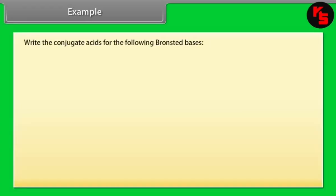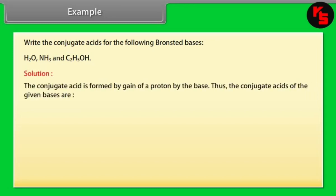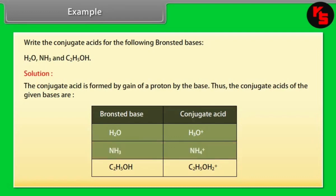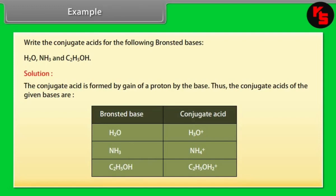Example — Write the conjugate acid for the following Brønsted bases: H₂O, NH₃, and C₂H₅OH. Solution: the conjugate acid is formed by gain of a proton by the base. The conjugate acid of H₂O is H₃O⁺; of NH₃ is NH₄⁺; of C₂H₅OH is C₂H₅OH₂⁺.